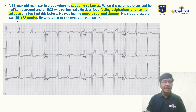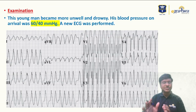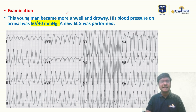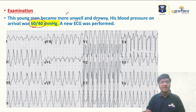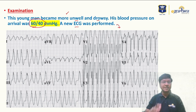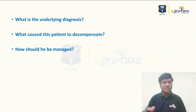This is the ECG taken by the paramedics at the pub when he suddenly collapsed. He was immediately shifted to the emergency department. When I examined the patient, he was unwell and drowsy. His blood pressure in the emergency department was 60/40 mmHg, and a new ECG was performed.